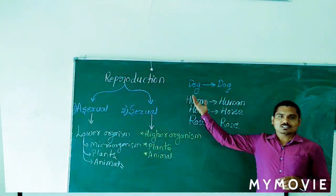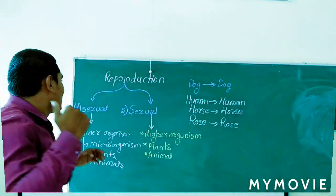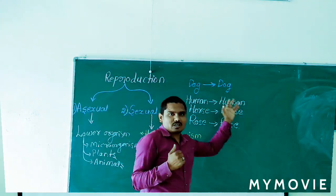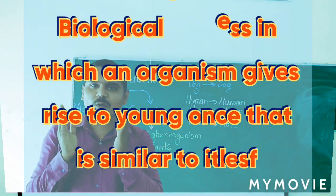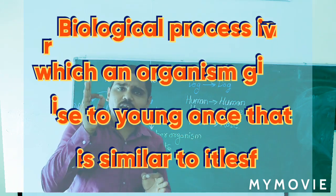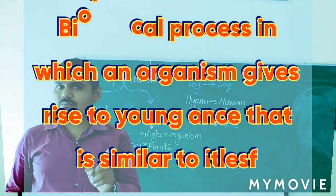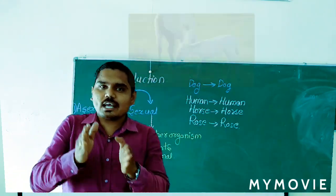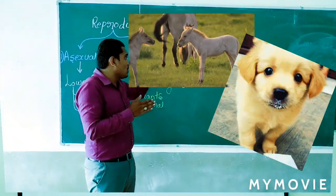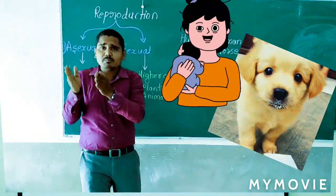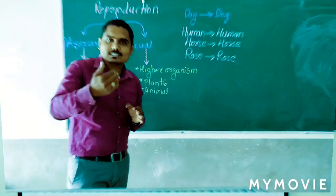Reproduction is a biological process in which an organism gives rise to young ones that are similar to itself. Similar to itself means: a horse produces a horse baby, a dog produces a dog baby, and a human produces a human baby. That is what we consider as an organism reproducing itself.